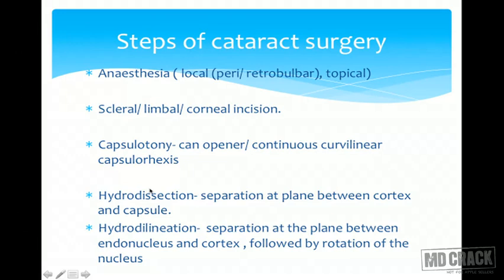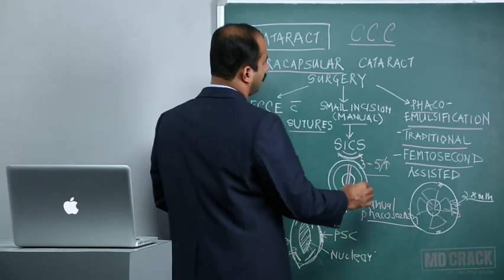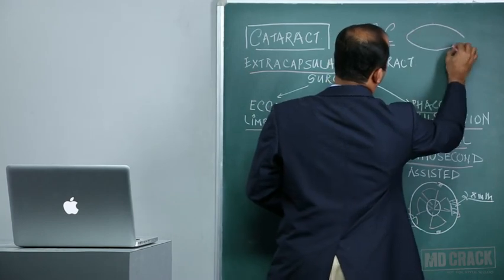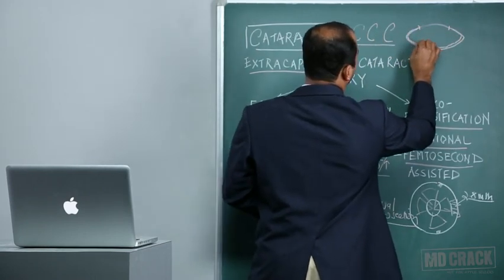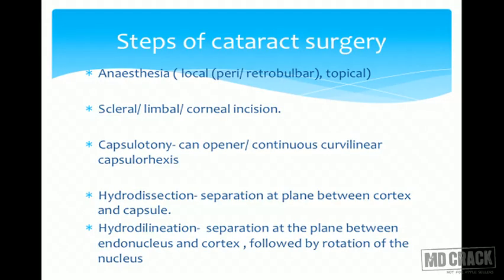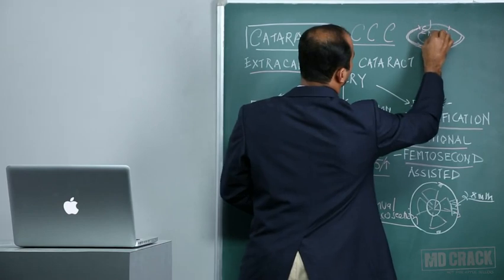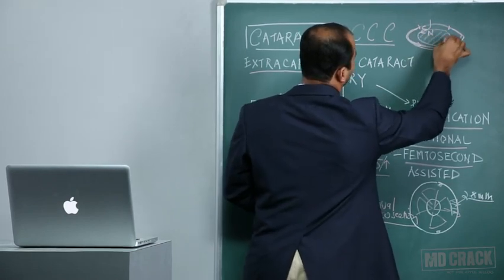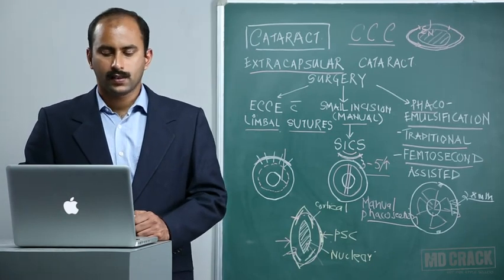Hydrodissection is the next step once the circular capsular opening is achieved. A fluid wave is injected via a cannula under the capsular opening; this wave dissects or cleaves between the cortex and the capsule, separating their adhesions and enabling mobility of the nucleus inside the capsular bag. Hydrodelineation reduces the effective size of the endonucleus by injecting between the cortex and the nucleus, delineating the endonucleus to facilitate its removal through a smaller incision or to better target it during phacoemulsification.